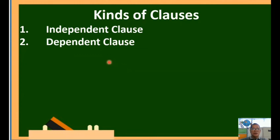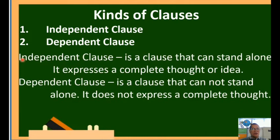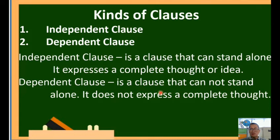Before we continue, we need to study first the two kinds of clauses. An independent clause is a clause that can stand alone — ito ay isang clause na nakakapag-iisa. In Filipino this is called sugnay na nakapag-iisa. It expresses a complete thought. A dependent clause, on the other hand, cannot stand alone — ang tawag dito ay sugnay na di nakapag-iisa. It does not express a complete thought; it depends on the independent clause for meaning.